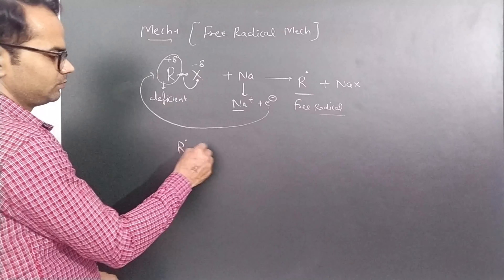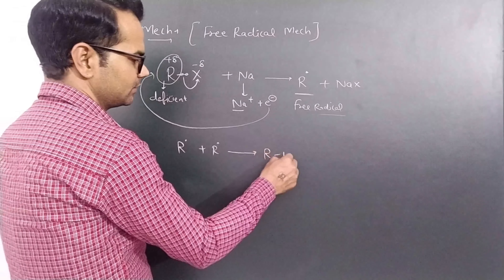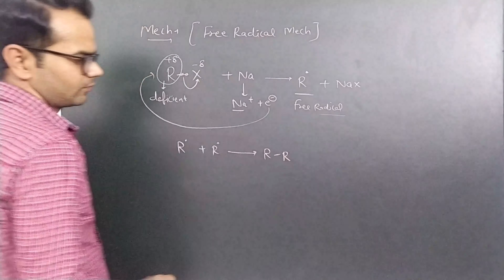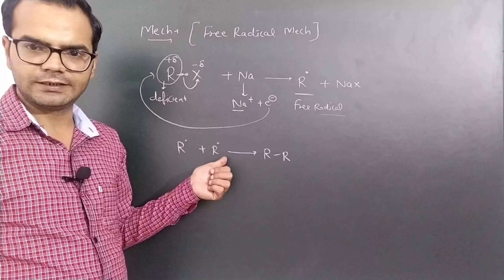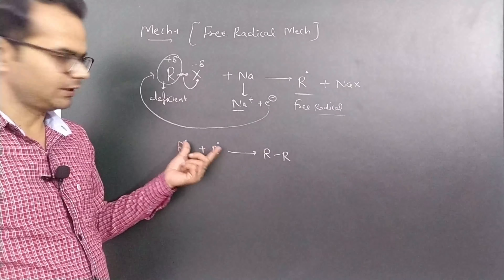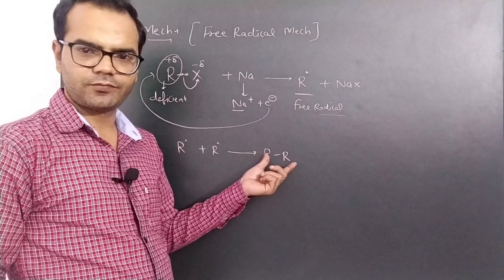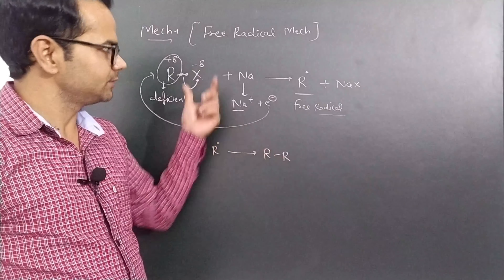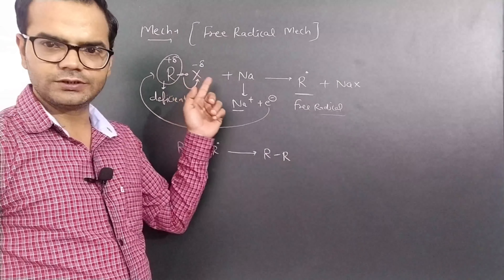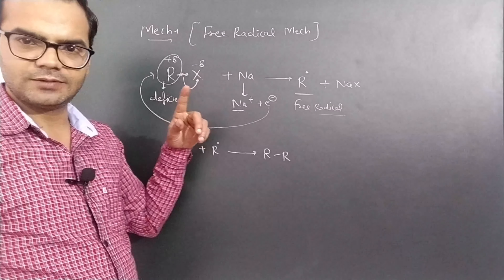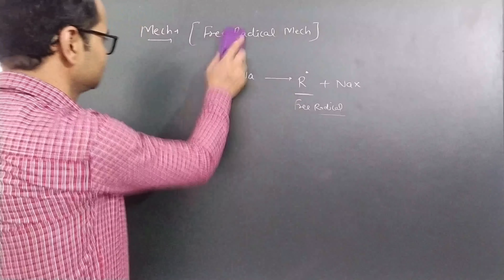Another free radical forms from the second molecule. Both free radicals combine — they are highly reactive due to unpaired electrons — and alkane is formed. This is the free radical mechanism of the Wurtz reaction.